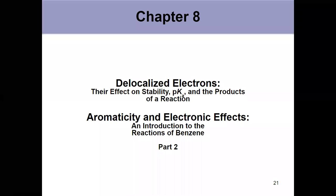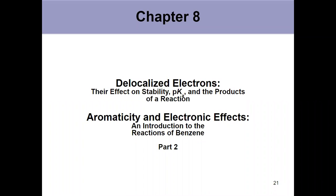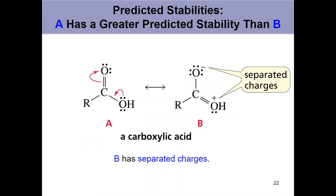Our second video from Chapter 8 is kind of a hodgepodge of information, and there's a lot of important stuff that's going to be introduced in this video to lay the framework for the rest of the chapter regarding delocalized electrons. The first thing we're looking at is the stability of resonance contributors. These ideas covered in the next eight or so slides are really important, so make sure you understand the stability of resonance contributors, how to predict what's stable and what's not, and the relationship between number of resonance contributors and overall stability.